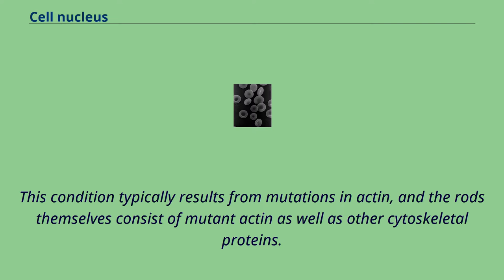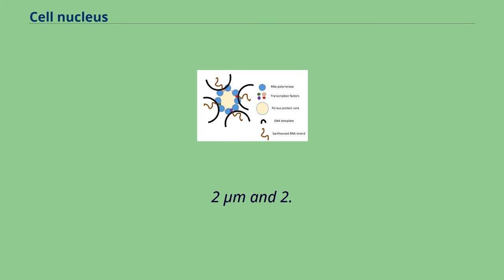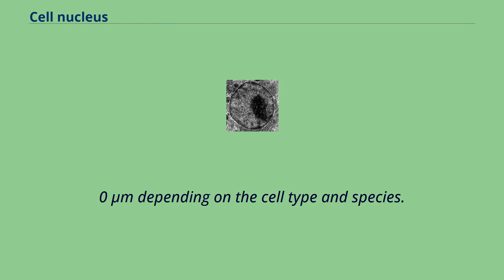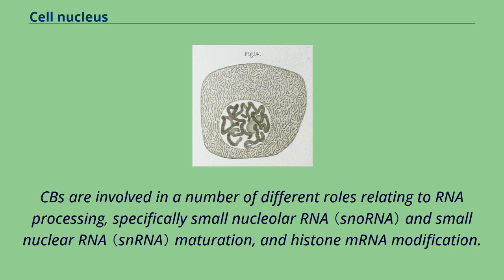A nucleus typically contains between 1 and 10 compact structures called Cajal bodies or coiled bodies, whose diameter measures between 0.2 micrometers and 2.0 micrometers depending on the cell type and species. When seen under an electron microscope, they resemble balls of tangled thread and are dense foci of distribution for the protein coilin. Cajal bodies are involved in a number of different roles relating to RNA processing, specifically small nuclear RNA and small nucleolar RNA maturation, and histone mRNA modification.